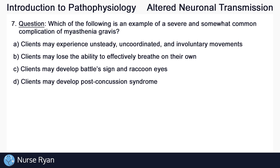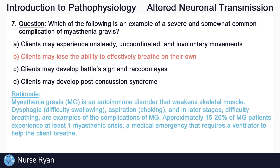Question number seven: which of the following is an example of a severe and somewhat common complication of myasthenia gravis? The answer is B — clients may lose the ability to effectively breathe on their own. Myasthenia gravis or MG is an autoimmune disorder that weakens skeletal muscle. Dysphagia, difficulty swallowing, aspiration, which is choking, and in later stages difficulty breathing are examples of the complications of MG. Approximately 15 to 20% of MG patients experience at least one myasthenic crisis, a medical emergency that requires a ventilator to help the client breathe.